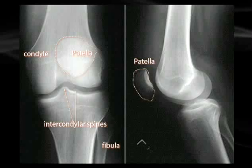The intercondylar spines — or intercondylar eminence — serve as attachment points for the menisci, and on the edges of each you'll have the attachments of the cruciate ligaments. Notice the gap between the two condyles: if one is lower than the other, that could be a Q-angle problem or a meniscal problem where one side is wearing away, indicating arthritis.